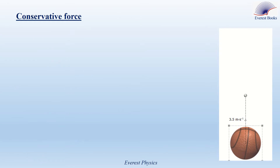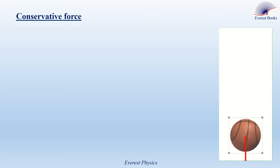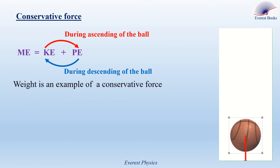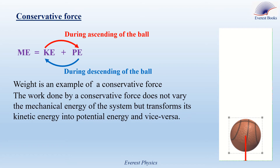Conservative forces. Observe the motion of this ball — it moves up and down. Consider the system ball-Earth. The mechanical energy of this system is given by kinetic energy plus gravitational potential energy. During the ascending of the ball, the work done by the weight results in a transformation of kinetic energy into potential energy. During descending, the work done by the weight results in a transformation from potential energy into kinetic energy. Since both are parts of the mechanical energy, the work done by the weight does not vary the mechanical energy. Therefore, the weight is called a conservative force. In general, the work done by a conservative force doesn't vary the mechanical energy of the system, but transforms kinetic energy into potential energy and vice versa.